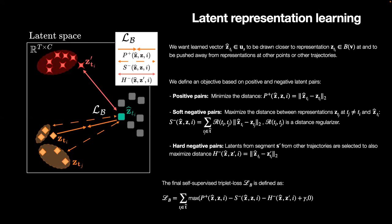Therefore, we define three pairs. We define positive pairs between the encodings from the trajectory at the temporal locations and the corresponding latents. Soft negatives are defined from segment encodings at different temporal locations, regularized based on the temporal distance to the learned latents. Hard negative pairs are defined from encodings of segments from different trajectories.